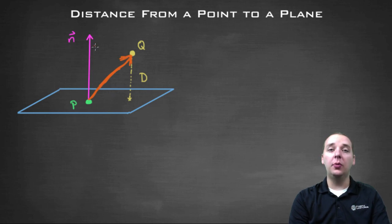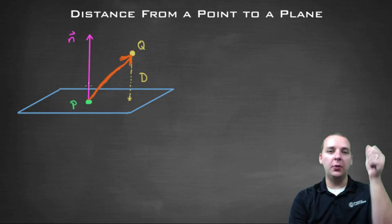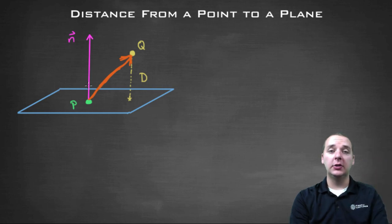And then you also have this normal vector to the plane as well, which can be drawn anywhere. So I'll start it at point P, just because I want to, because it can really have its initial point anywhere. You can move a vector anywhere in space that you want to, as long as it has the correct magnitude and direction.